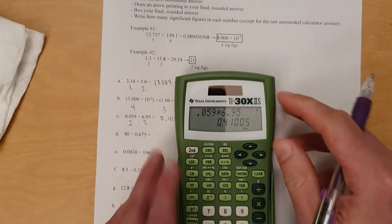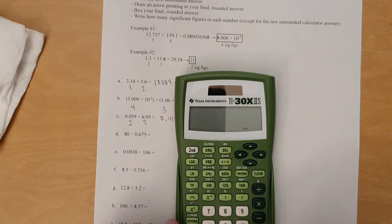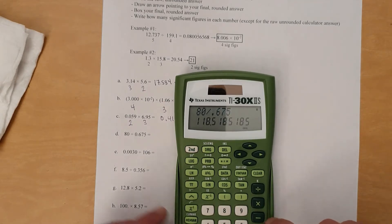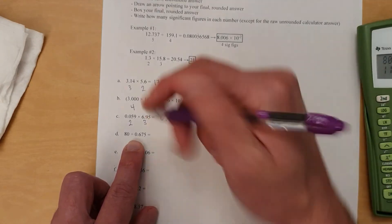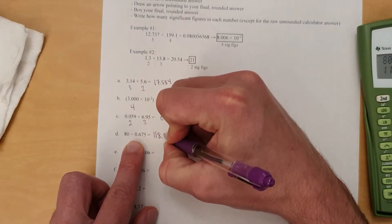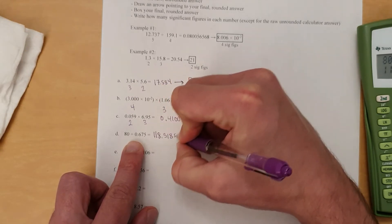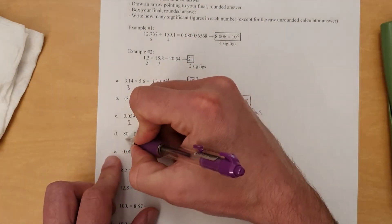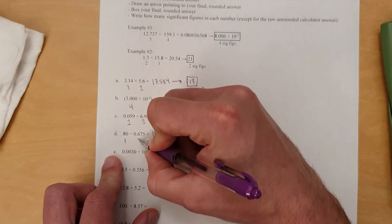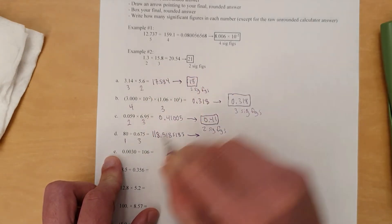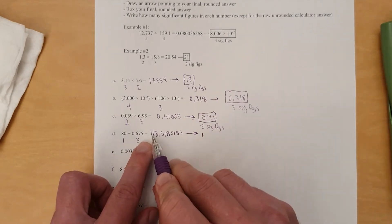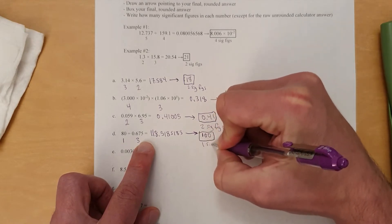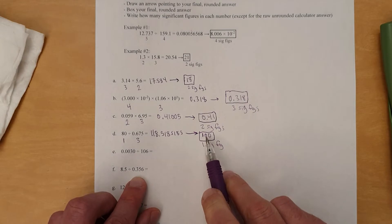All right, 80 divided by 0.675. So you get that, 118.518518518. All right, let's see. That is 1 significant figure, because there's no decimal. This is 3 significant figures. So you better round to 1 sig fig. That 1 right here, this 100, is next to a 1, so it rounds down. So it just becomes 100. Yep, that's what it rounds to.